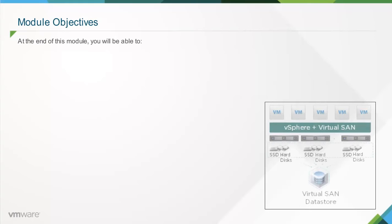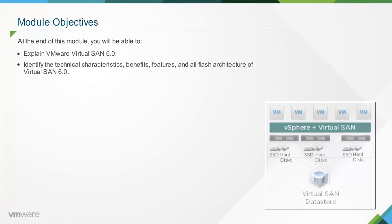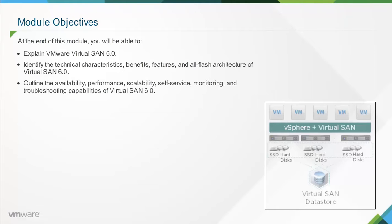At the end of this module, you will be able to explain VMware Virtual SAN 6.0, identify the technical characteristics, benefits, features, and all-flash architecture of Virtual SAN 6.0, and outline the Availability, Performance, Scalability, Self-Service, Monitoring, and Troubleshooting capabilities of Virtual SAN 6.0.